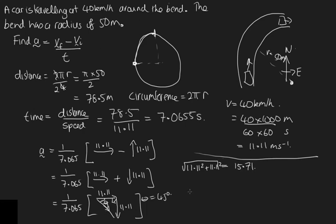So we know this magnitude now. So the magnitude of the acceleration is equal to the 15.71 over the time, which is the 7.065. And so this is equal to 2.2 meters per second per second is our acceleration. And then acceleration is a vector. So we need to use this to give a direction. And so that's down here, halfway between. And so that is in the southeast direction.